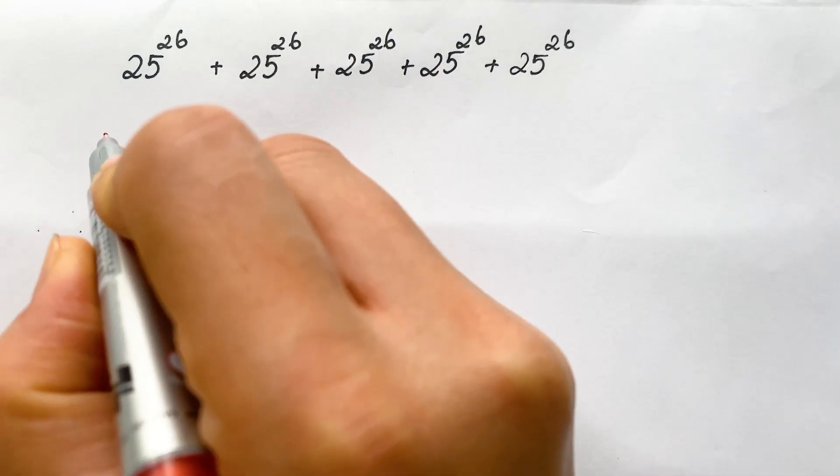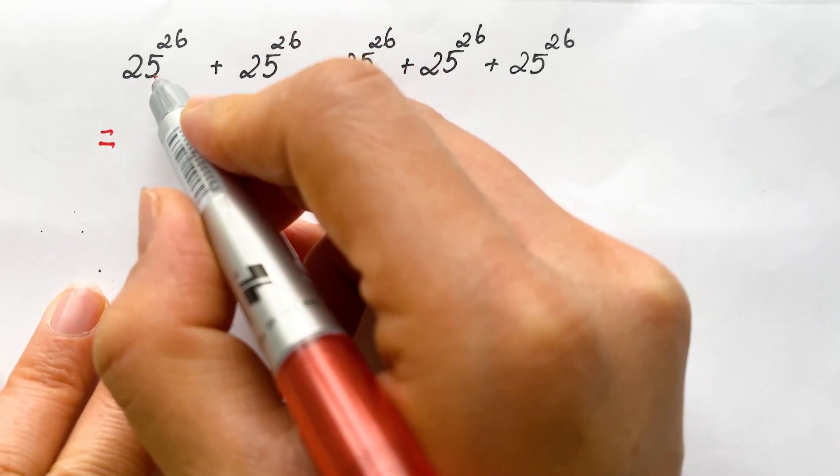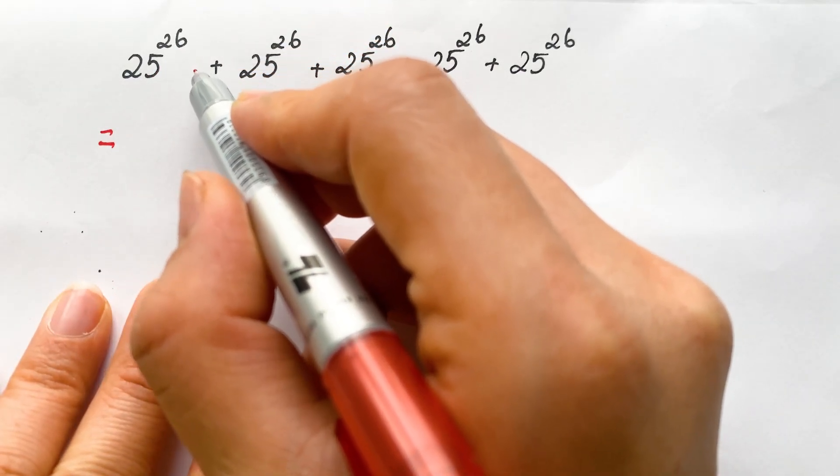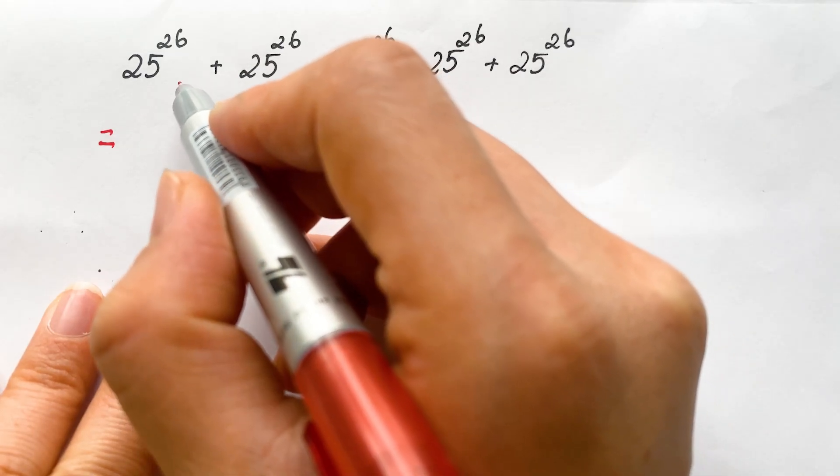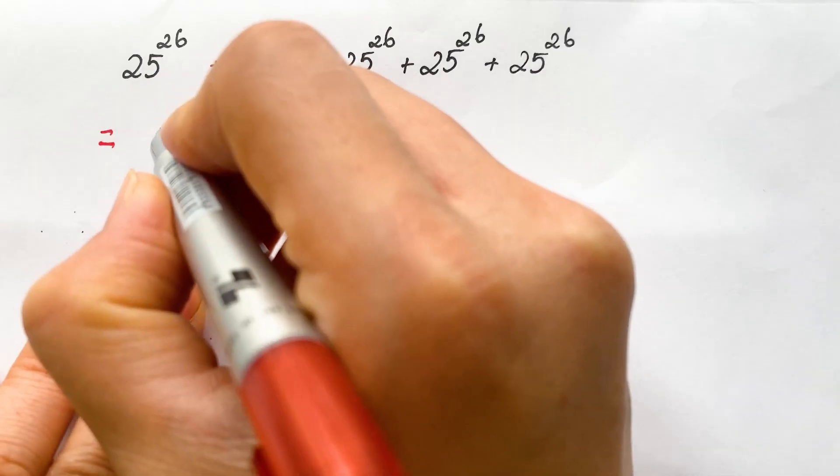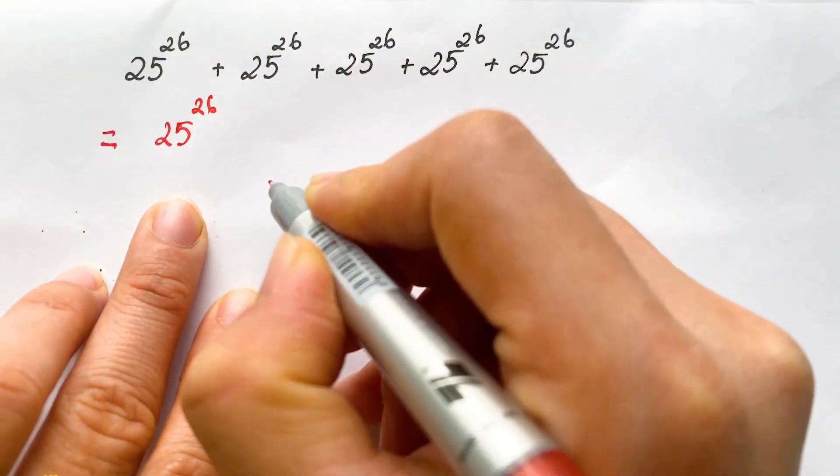So everyone can see, we have 25 power 26 is the common number. So we need 25 power 26 out. Therefore, we have 25 to the 26 out.